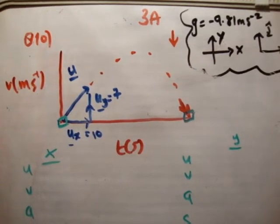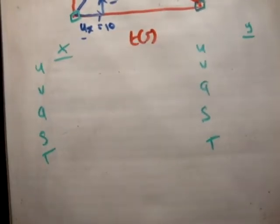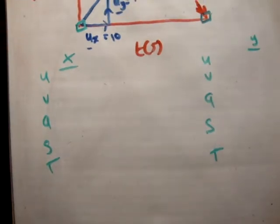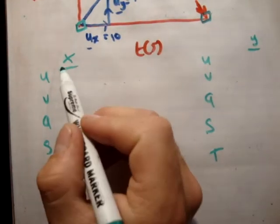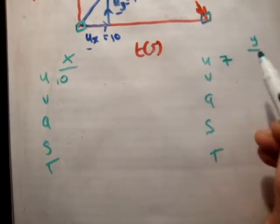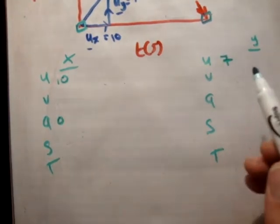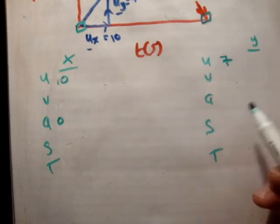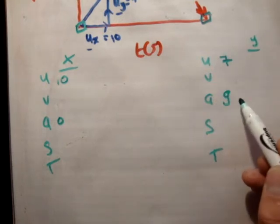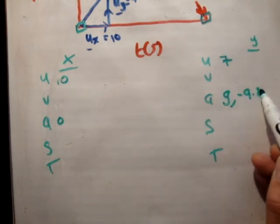So the first thing we need to do is put in the information that we know. u sub x is equal to 10, u sub y is equal to 7. The acceleration sub x equals 0, and the acceleration sub y is equal to g, or minus 9.81.